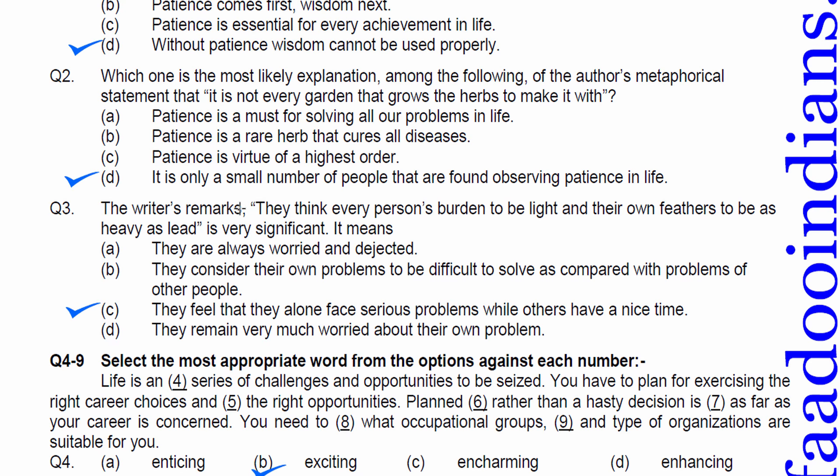Question 2. Which one is the most likely explanation among the following of the author's metaphorical statement? That it is not every garden that grows the herbs to make it with. The statement clearly indicates there may be gardens that don't grow the herbs. Likewise, option D. It is only a small number of people that are found observing patience in life. Therefore, option D.